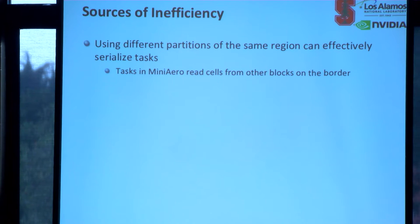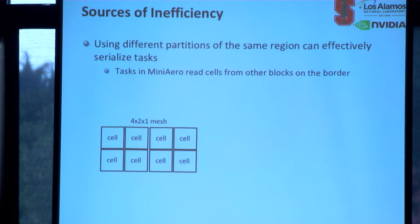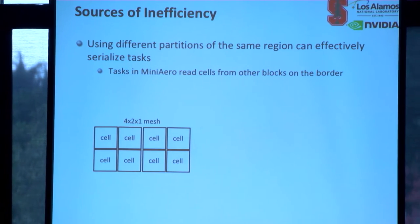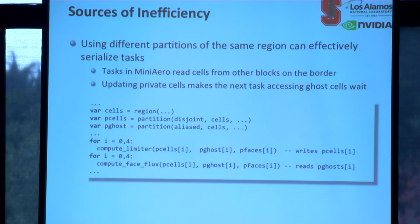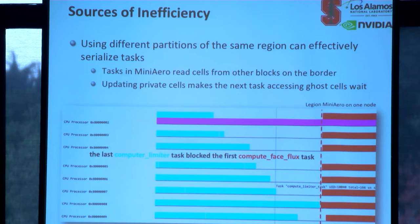MiniAero is one of these examples. In MiniAero we have three-dimensional meshes, and we have two partitions of the same data: a disjoint partition to divide the mesh into several blocks, and an alias partition to access cells from other blocks. In a simplified version of the MiniAero code, each task writes to the disjoint partition and reads from the alias partition, which creates this serialization pattern in the timeline.